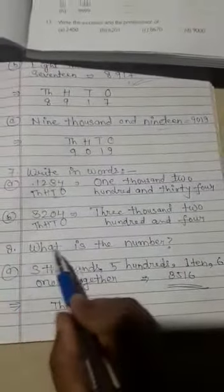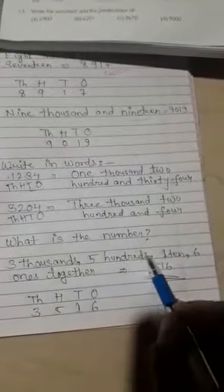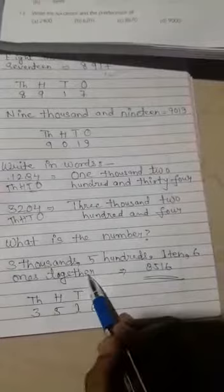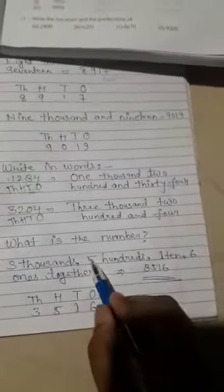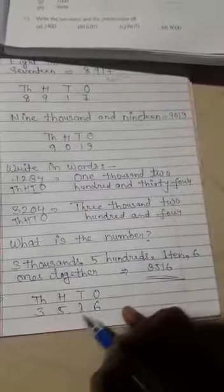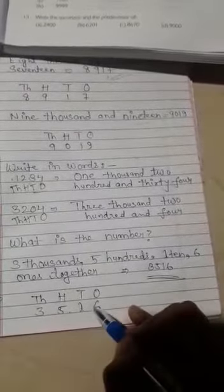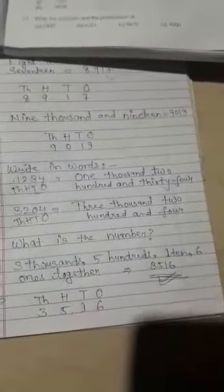Question number eight: what is the number? Three thousand, five hundred, one ten, six ones together. Three thousand, right 3 in thousands place. Five hundred, right 5 in hundreds place. One ten, right 1 in tens place. Six ones, right 6 in ones place. Three thousand five hundred sixteen is your answer.